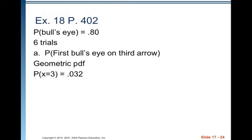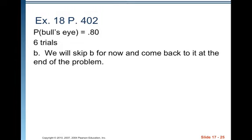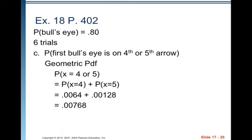She misses the bullseye at least once. That's a little more complicated, so we're going to skip it, come back at the end of the problem. Let's look at C. Her first bullseye comes on the fourth or fifth arrow. So we want the probability that the first bullseye is on the fourth or fifth arrow. We can use PDF where we do probability X equals 4 plus probability X equals 5. So we do 0.0064 plus 0.00128, and we get 0.00768.